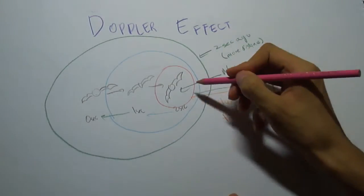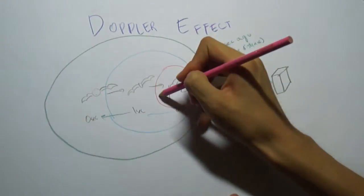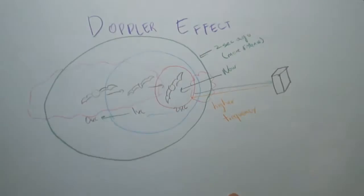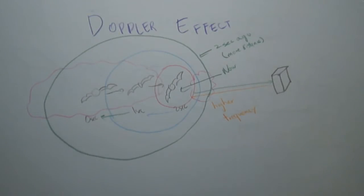This keeps the returning echo in the same frequency range of the normal echolocation call. This dynamic frequency modulation is called the Doppler shift compensation and was discovered by Hans in 1968.